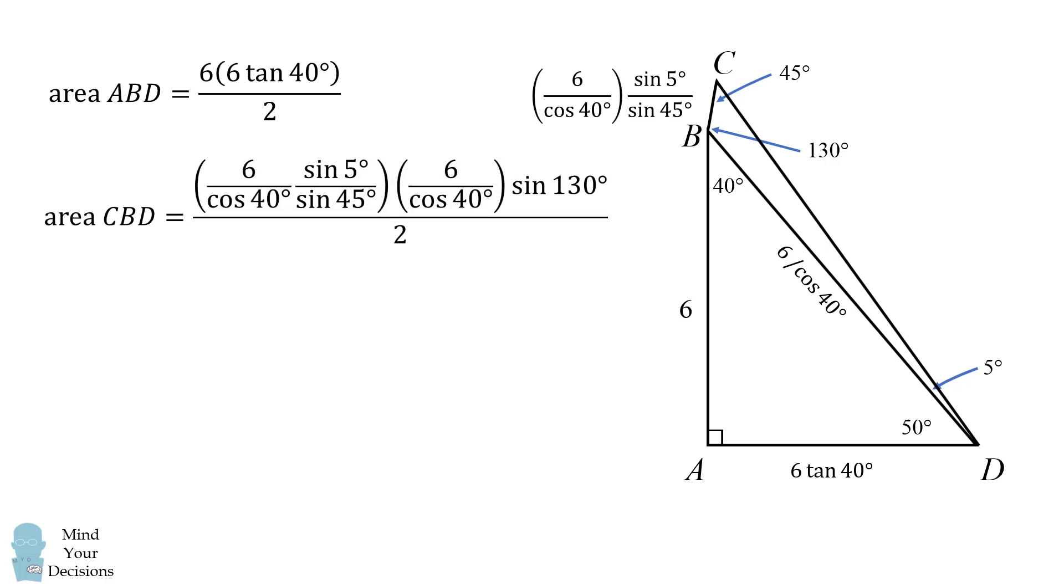So now to get the area of the quadrilateral we take the area of ABD plus the area of CBD. You can use a calculator to do this. I don't know how you would simplify it otherwise. And you end up with the answer of 18.